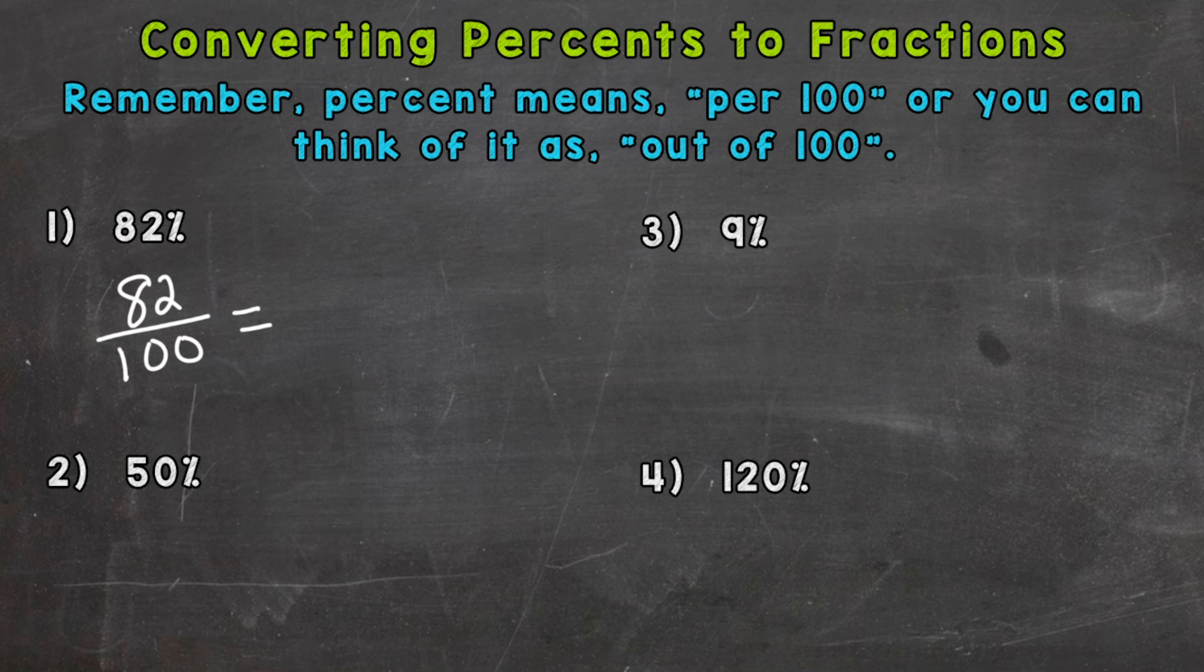A common factor between 82 and 100 would be 2. It's actually the greatest common factor. So let's divide both by 2 to get our fraction in lowest terms. So 82 divided by 2 is 41, and 100 divided by 2 is 50. So again, percent means per 100, so 82 percent means 82 over 100, and then we simplify.